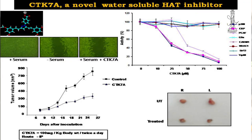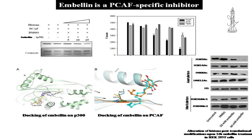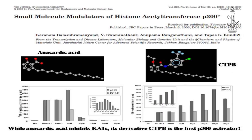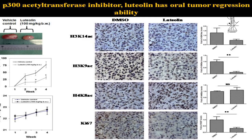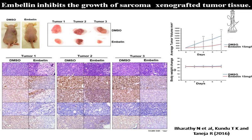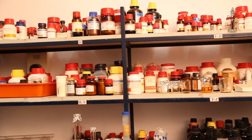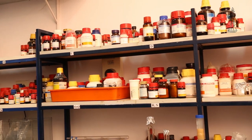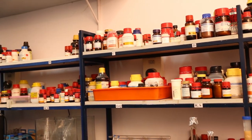Interestingly, the lab discovered several small molecules that can target acetyltransferase activity, both specifically and non-specifically. We found that in mice models we can actually reduce oral cancer growth. This suggests that epigenetic therapeutics could be very important, either alone or in combination with other treatments.